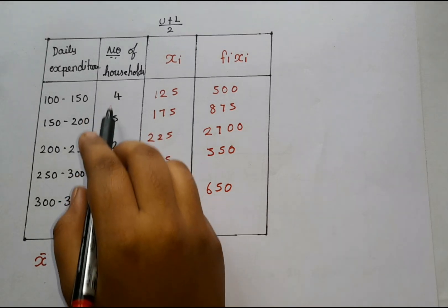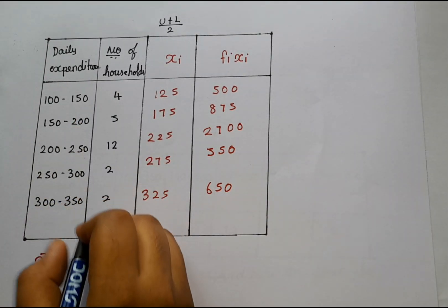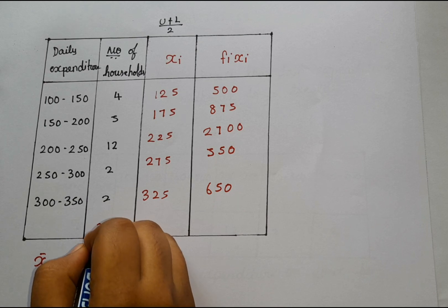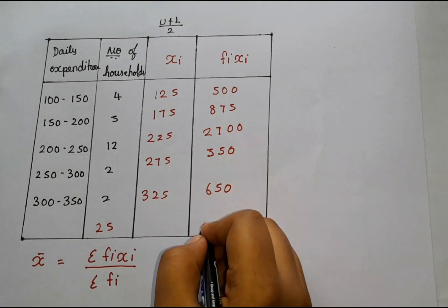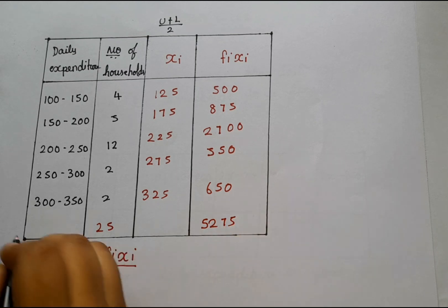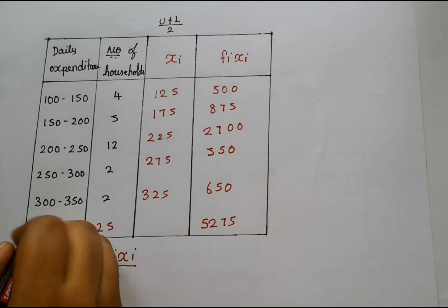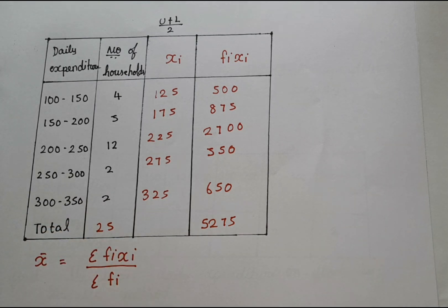Alright. So now we are supposed to do the total of Fi. The total for Fi is 25. And here when we just add everything, we will get a value that is 5275. So here what I am writing is a total.